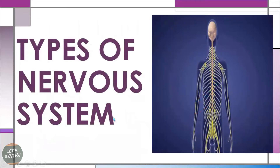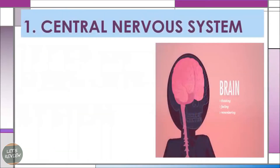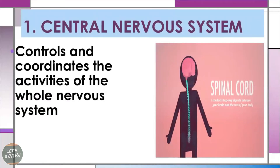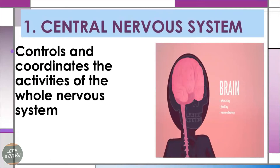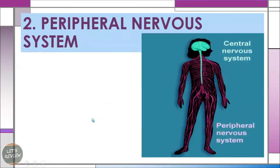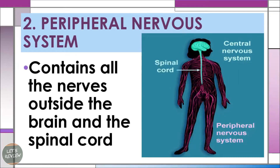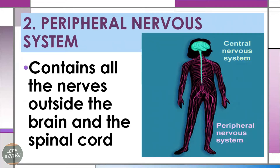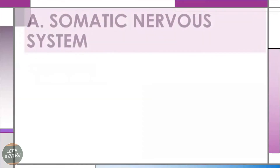Now let's look at the different types of the nervous system. First, we have the central nervous system, which controls and coordinates the activities of the whole nervous system. It is composed of the brain and the spinal cord. Second is the peripheral nervous system, which contains all the nerves outside the brain and the spinal cord.